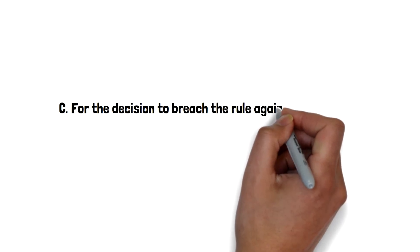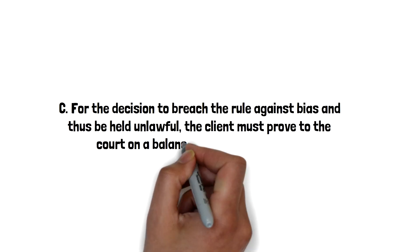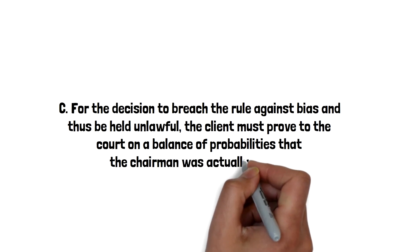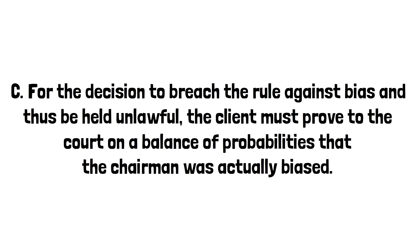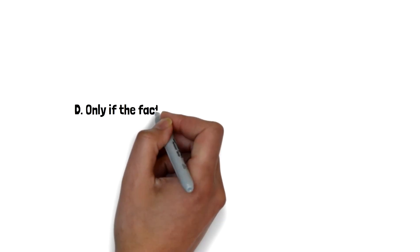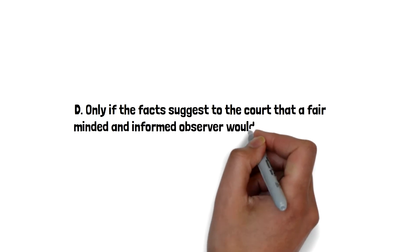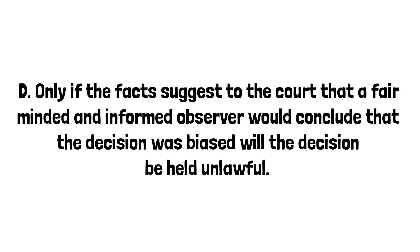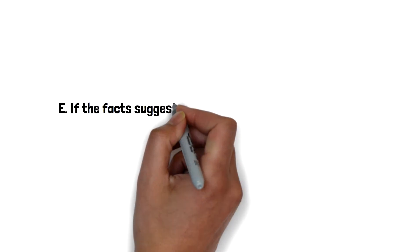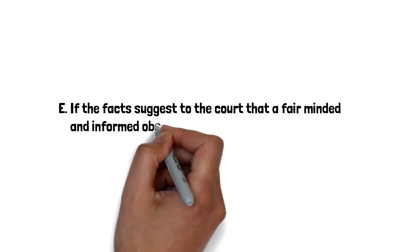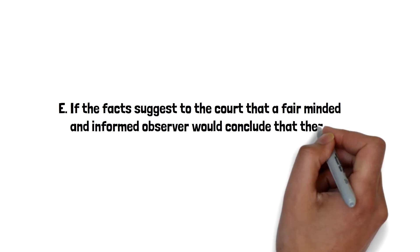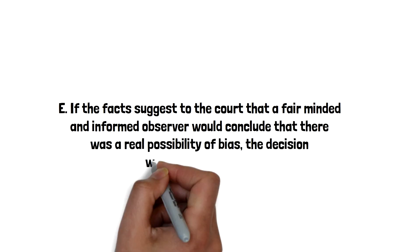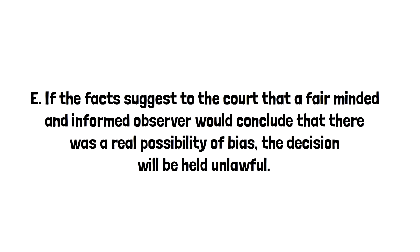Option C: For the decision to breach the rule against bias and thus be held unlawful, the client must prove on a balance of probabilities that the chairman was actually biased. Option D: Only if the facts suggest to the court that a fair-minded and informed observer would conclude that the decision was biased, will the decision be held to be unlawful? Option E: If the facts suggest to the court that a fair-minded and informed observer would conclude that there was a real possibility of bias, the decision will be held unlawful?